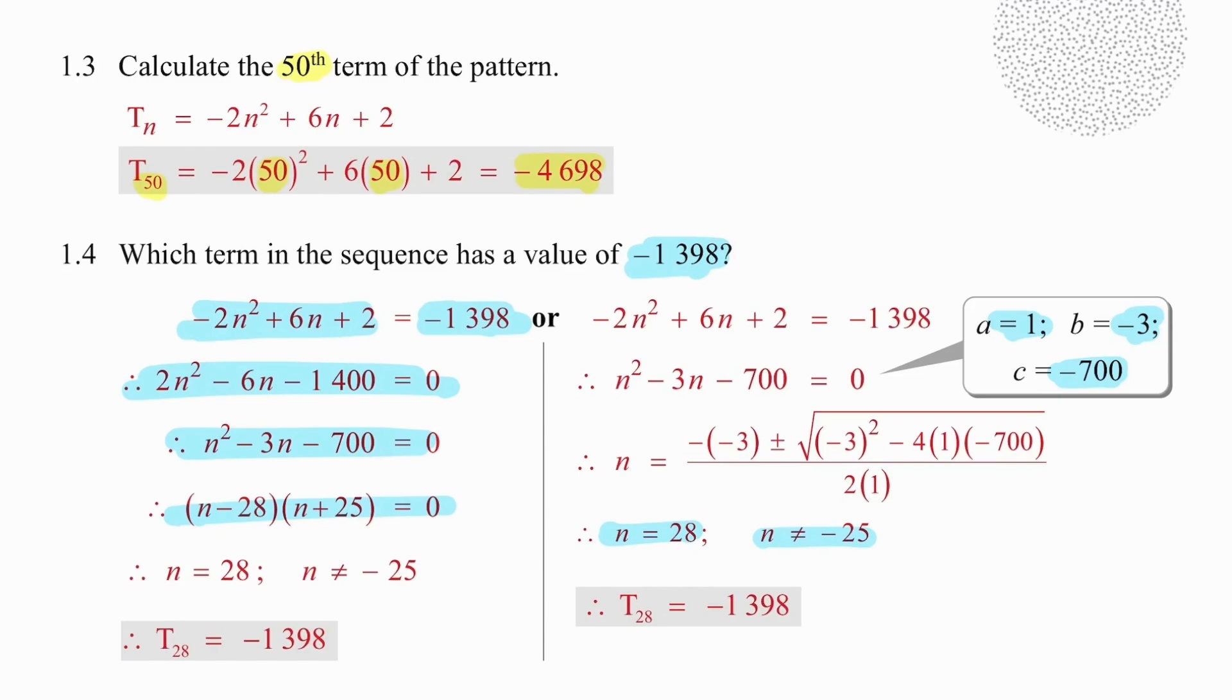In both cases, we need to show both answers, remembering to discard any negative or fraction answer. So the only result that we will end up with is n equal to 28, and from that we conclude that the 28th term has a value of minus 1,398.